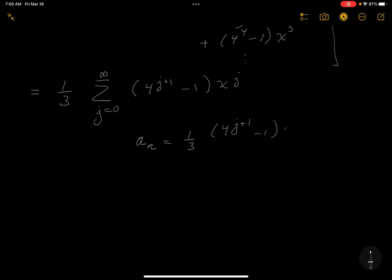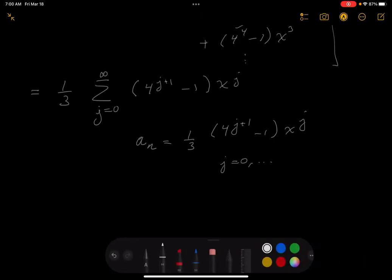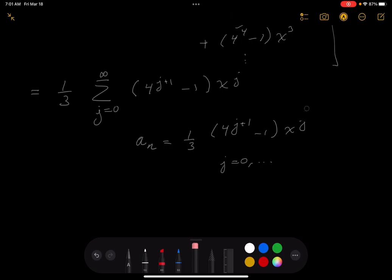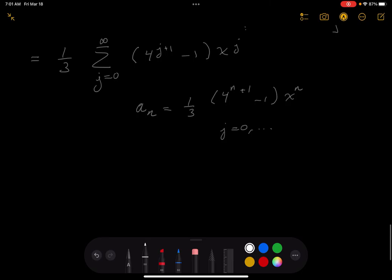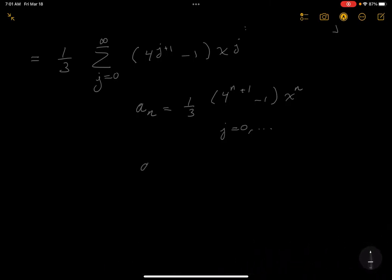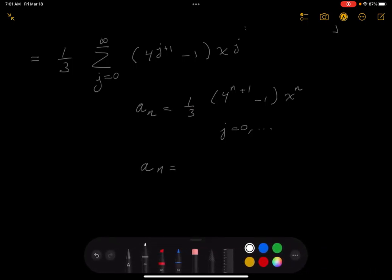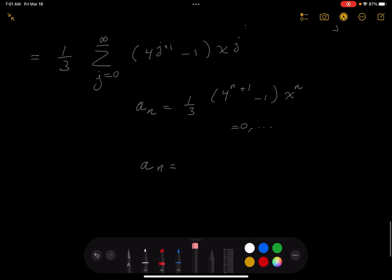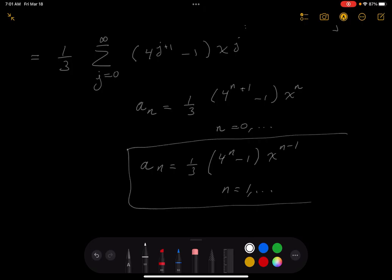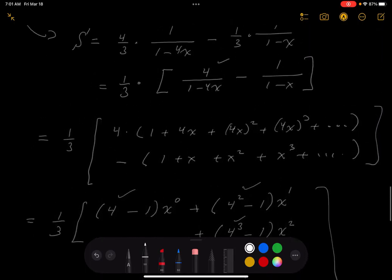All right, so I can write the a_n down now. That would be 1 third, 4 to the J plus 1, minus 1, X to the J. And that's where I start. J starts at 0, yada yada yada. Well, I'm sorry. I'm not using J now. I'm using N. But you know Wells, he wants to start at 1. I have to erase something again. I just got J in my brain. Well, let's write this down. 1 third, 4 to the N, minus 1, X to the N minus 1. And this starts at 1 now. I'm going to box in this. We'll look at the key later.